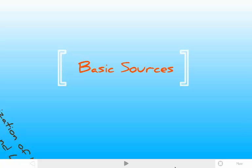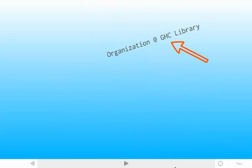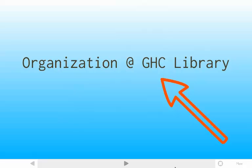We're going to look at basic sources of information. We are going to talk about how information is organized, how to select a topic, and the different layers of research. A lot of these principles you will be able to apply to other libraries, and we will talk about what other library systems might use, so you're familiar with those things, but we are going to also focus on how GHC is organized.